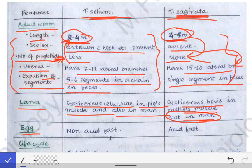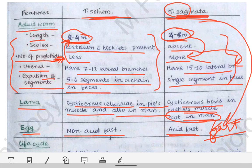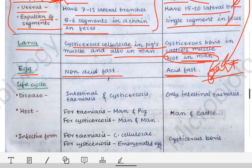Regarding the egg: the egg of Taenia solium is non-acid fast, but the egg of Taenia saginata is acid fast. A trick to remember this: write the name 'saginata' in reverse and you get 'GAST' — change G to F and it becomes 'FAST,' meaning Taenia saginata egg is acid fast.